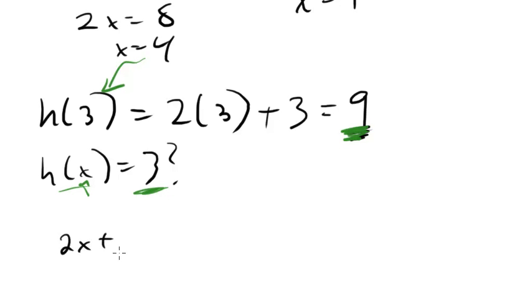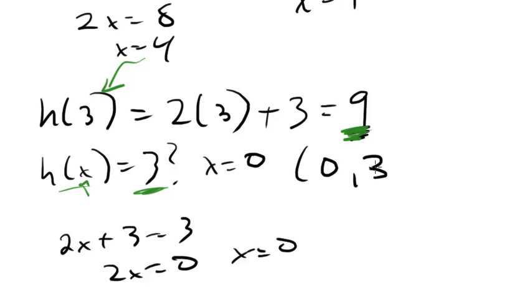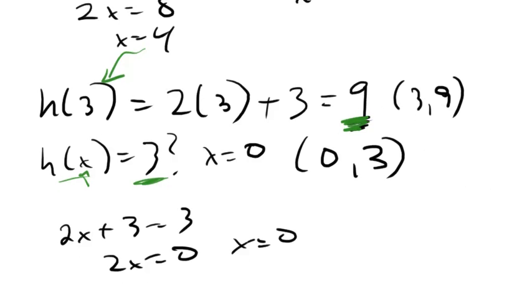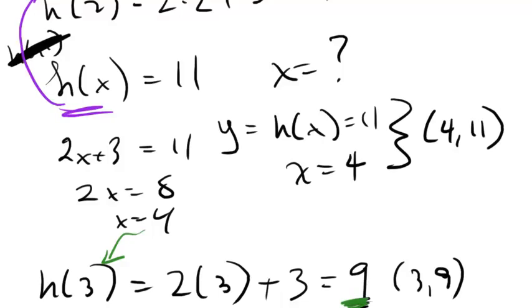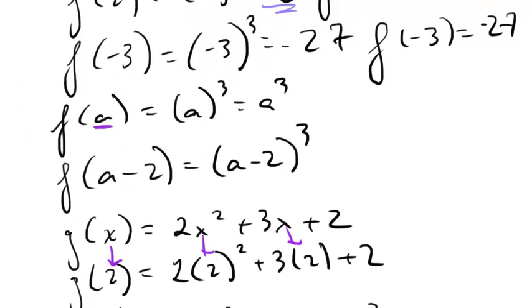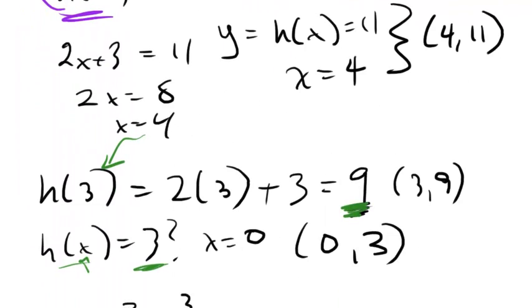So then we say 2x plus 3 equals 3, 2x equals 0, x equals 0. So this case x would equal 0, and this would correspond to the point 0, 3. This one up here would correspond to the point 3, 9. And that's pretty much the difference, and the important thing here, there's a difference between the input and the output, between what you put in and what comes out.